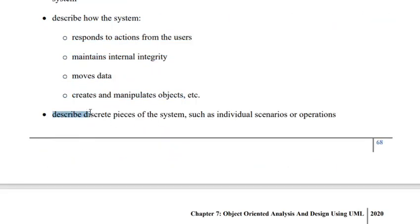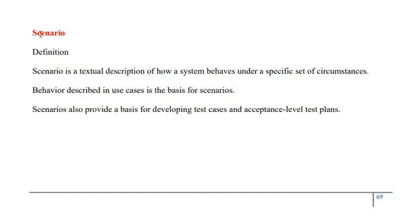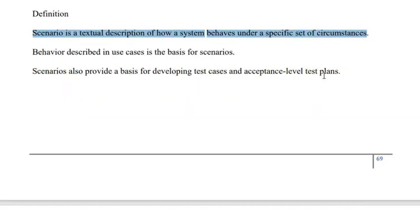A behavioral diagram is a diagram that describes a discrete chunk of behavior of a system, and that discrete chunk of behavior is called a scenario. A scenario may be defined as a particular way in which a system can be used by the user, and a system can be perceived as a collection of scenarios. Scenario is a textual description of how a system behaves under a specific set of circumstances — that is, a way in which a system behaves whenever a request comes from an external user. In order to understand scenario, we can correlate it with use cases, as the behavior described in use cases is the basis for scenarios.